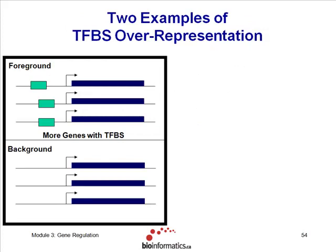This is an over-representation analysis problem, and over-representation analysis is the same thing that you were doing yesterday with GO. We seek to determine if a set of co-expressed genes contains an overabundance of predicted binding sites for a known transcription factor, and we're going to use phylogenic footprinting to reduce false positive predictions. There's one difference from the GO analysis: we have two styles of over-representation analysis that we can do.